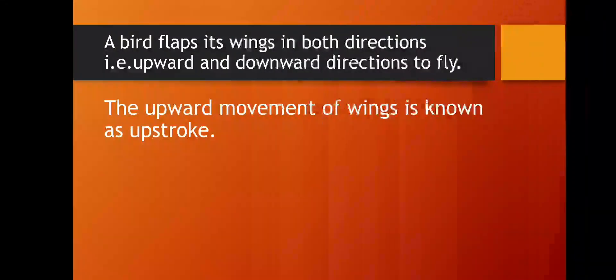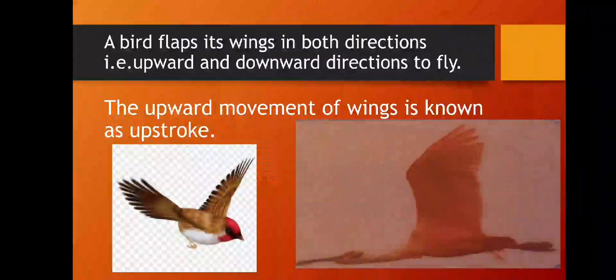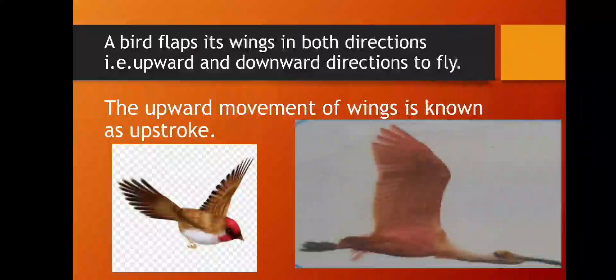The upward movement of wing is known as upstroke. When birds move their wings upward, it is called upstroke. Now see, this is again a very beautiful bird flapping its wings upward. This is known as upstroke. Here is another picture. A bird flapping its wings upward, so it is known as upstroke. When birds move their wings in an upward direction, we call it upstroke. Are you getting it students? Now let's move forward.